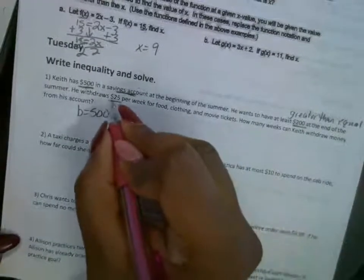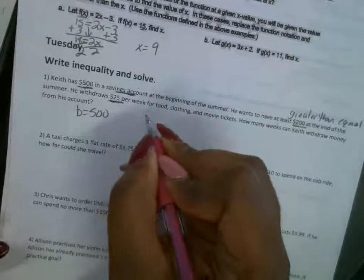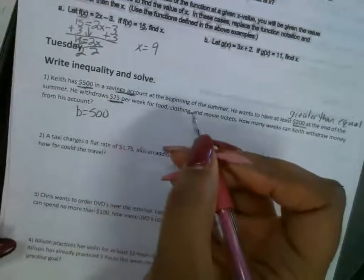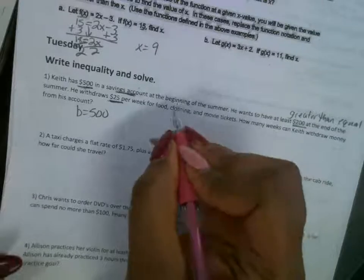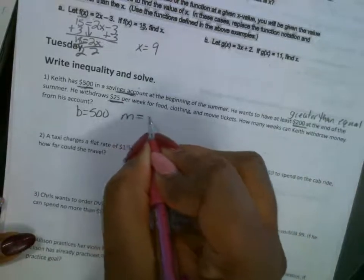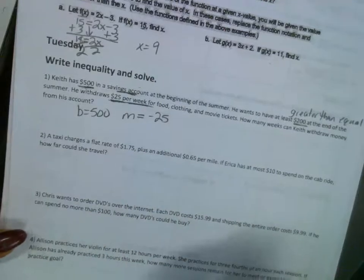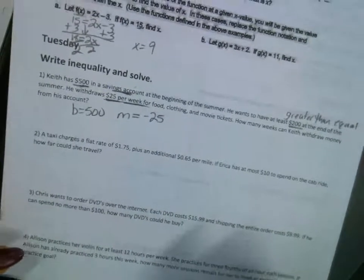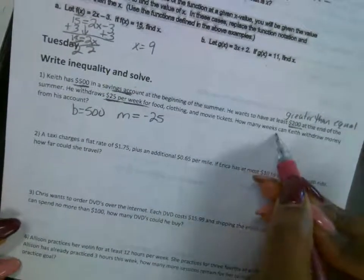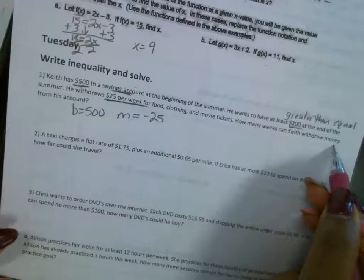He withdraws, that's subtraction. He withdraws $25 every single week. So my m here is going to be a negative $25 every single week for food, clothes, and movie tickets. Okay, how many weeks can he withdraw money from his account?